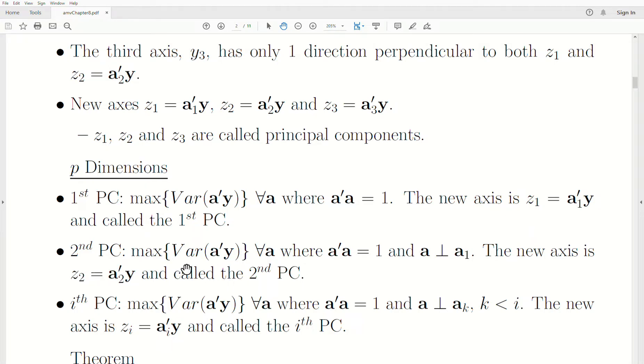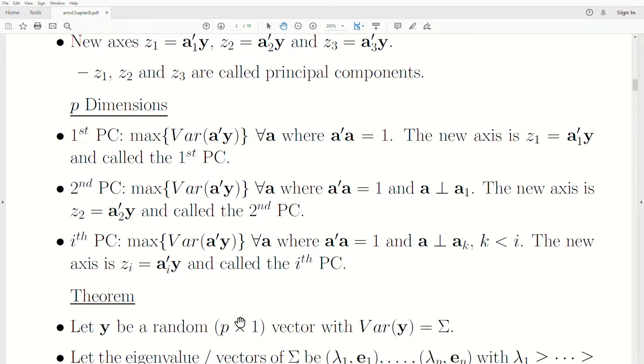The second principal component is the maximum variance of this linear combination such that the length of a is 1 and we're perpendicular to the first principal component, a ⊥ a1. This new axis is called the second principal component, z2 = a'y. We keep going until the ith principal component, which is the maximum variance for all a where a'a = 1 and a ⊥ ak for k < i. This new axis zi = a'y is called the ith principal component.